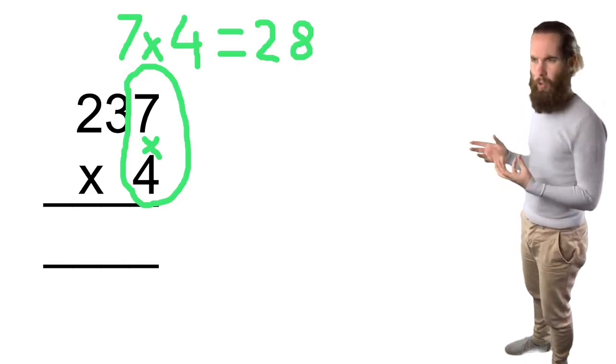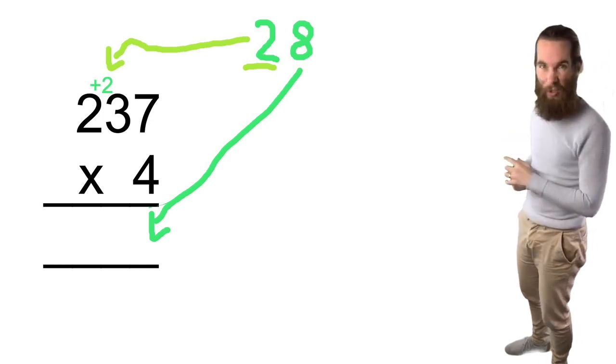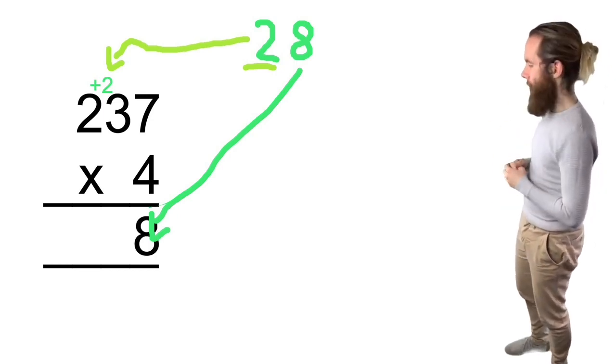So we've got two tens and eight units. I'm going to carry the two tens across to the tens column and I'm going to put down the eight units in my equal sign down there.